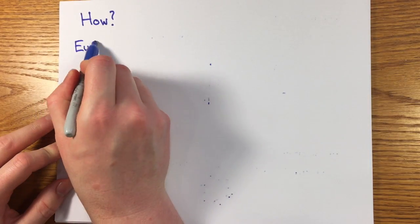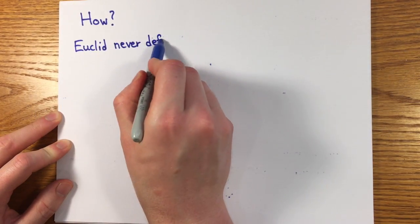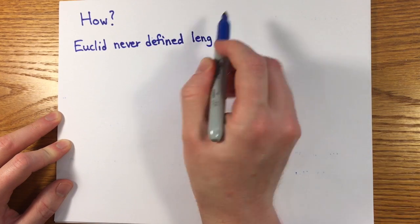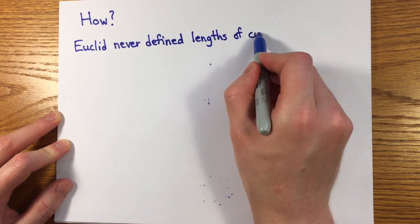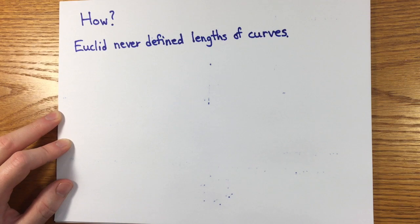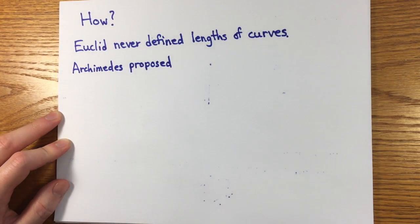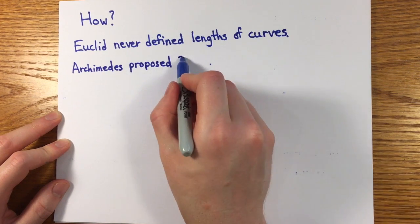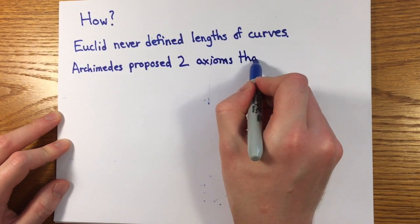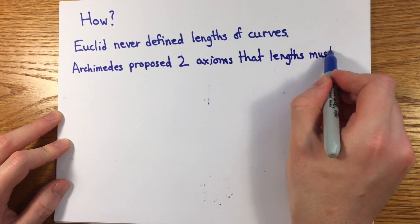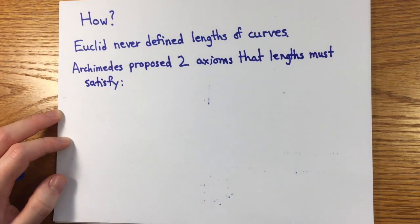Well, he decided he couldn't be done with the geometric axioms of Euclid. This makes sense because no one had until that point put forward a clear definition of the length of a curve. Archimedes was left to propose his own definition, but instead, instead of giving a definition, he proposed additional axioms setting forward the properties he thought any reasonable notion of length had to have.